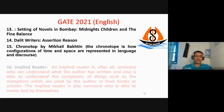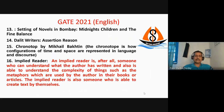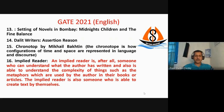The next question was about the implied reader. The implied reader is a concept given by Wolfgang Iser. Wolfgang Iser said that the implied reader is a kind of reader who is able to create the text by himself. That was the right answer.